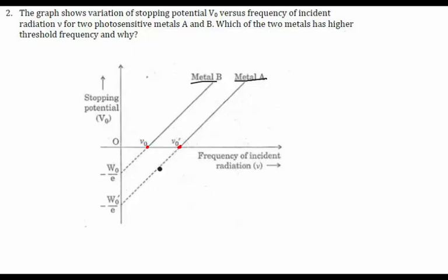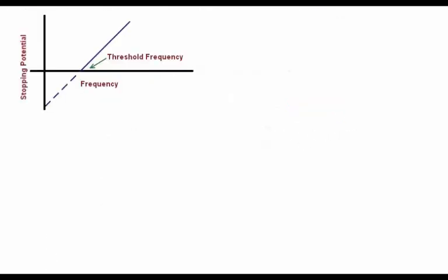In this graph, these two points are the two corresponding threshold frequencies. From the curve, we can say that the frequency of metal A, that is ν₀', is greater than ν₀. This will be the answer to this problem. The y-axis represents the stopping potential, and this point is the threshold frequency.